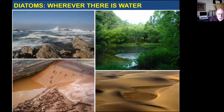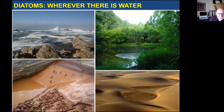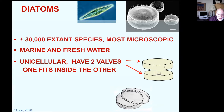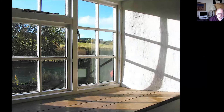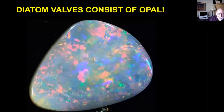Diatoms are unicellular organisms — single cells. They have two valves, typically one that fits inside the other, kind of like a petri dish. The valves are made of silica, which is a form of glass — but not really window glass. Instead, they are made of opal: not fire or precious opal, but rather a common amorphous opal. A little bit more on this later in the talk.